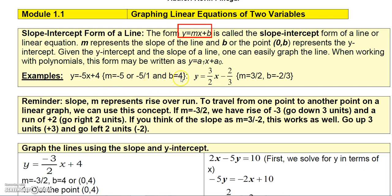If you had 3/2 times x minus 2/3, then the slope would be 3/2 and the y-intercept would be -2/3.